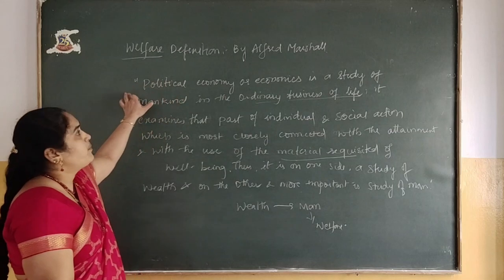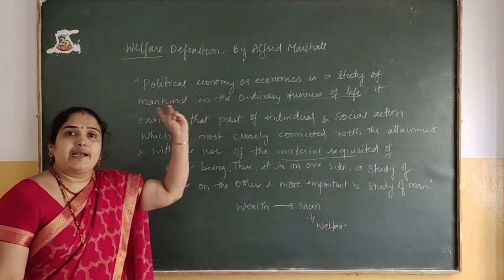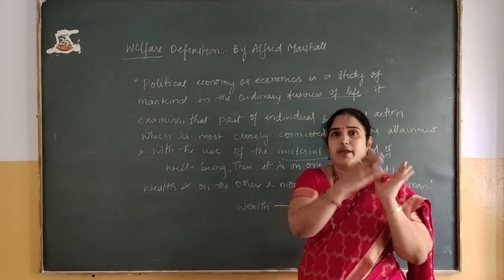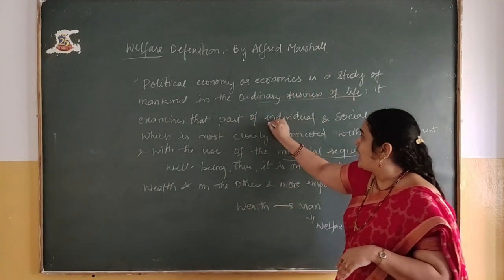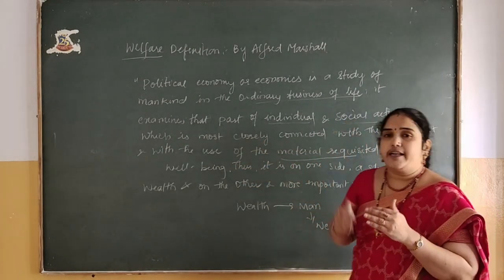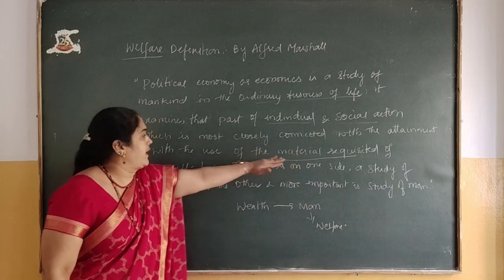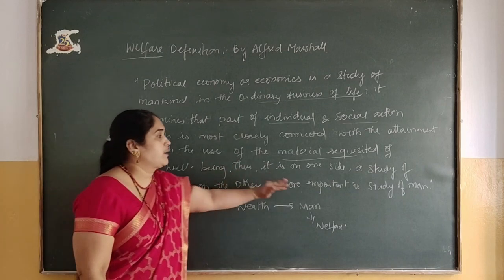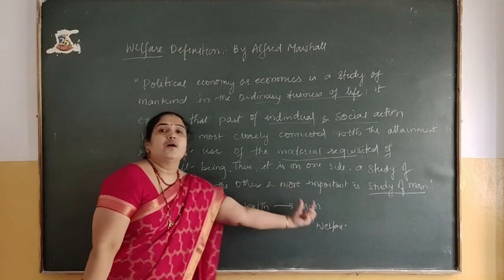Marshall says every economics is the study of mankind in the ordinary business of life. While Adam Smith regarded economics as the study of the economic man, Marshall shifted his emphasis from the economic man to the ordinary business of life — he examines how an individual or society is connected with attaining the material requisites of well-being. This is on one side a study of wealth, and on the other, most importantly, the study of man — he shifted from wealth to welfare.